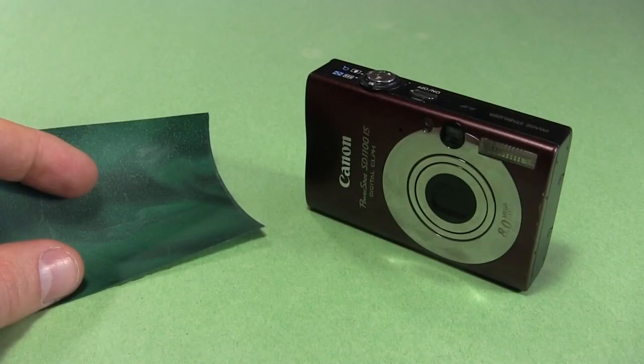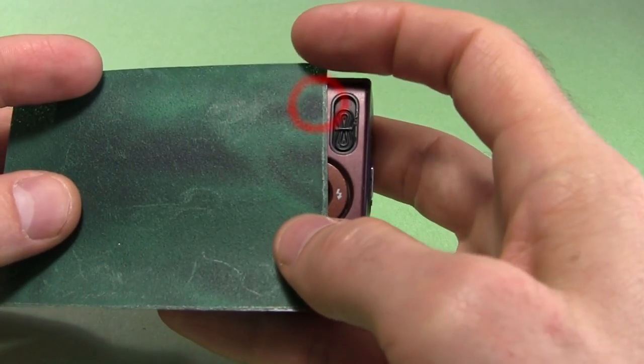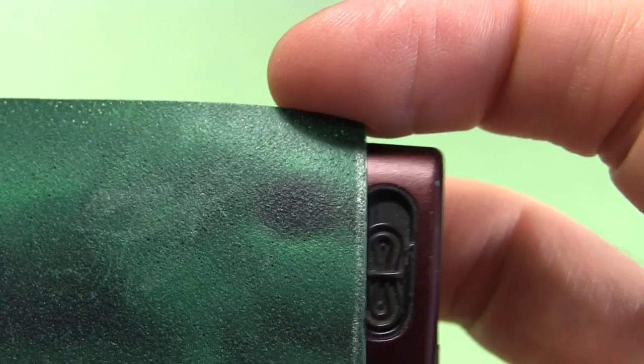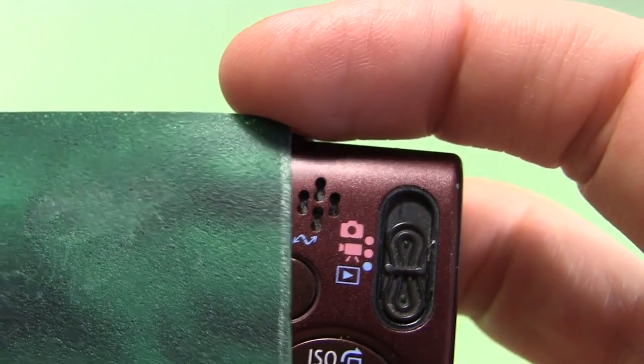You can do a lot of neat things with magnetic viewing film. Here's an old camera. Moving the film over it, we see a magnetic field here. The camera's speaker is in there. Most types of speakers contain magnets.